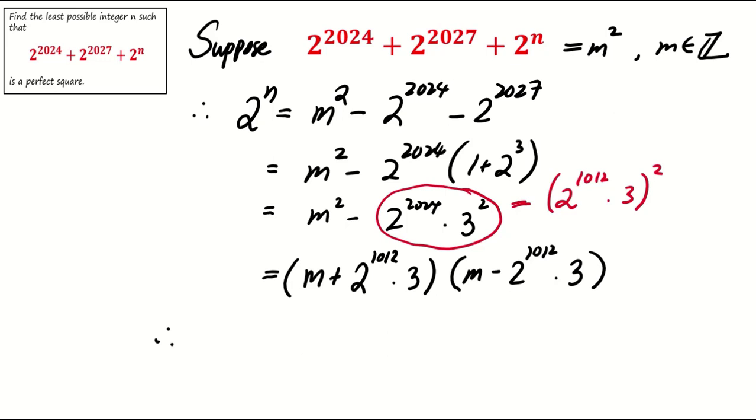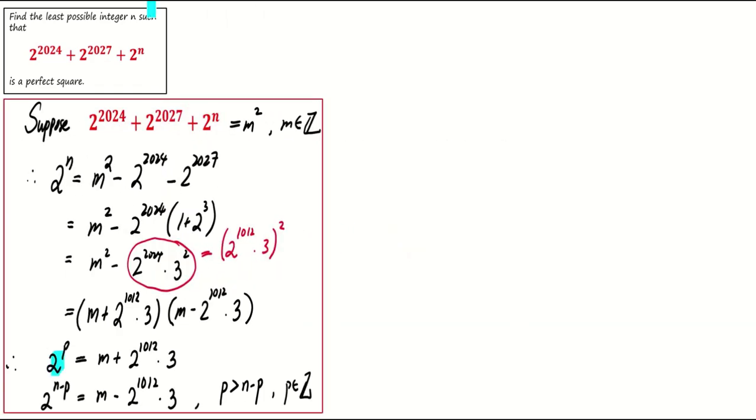Now we can write 2 to the power of p as m plus 2 to the power of 1012 times 3 and 2 to the power of n minus p as m minus 2 to the power of 1012 times 3, where p and n minus p are both integers. Now we label the two equations as equation 1 and equation 2.